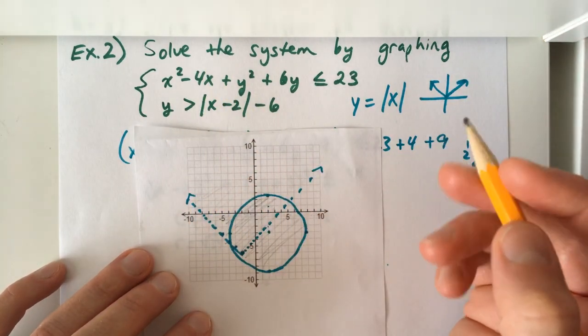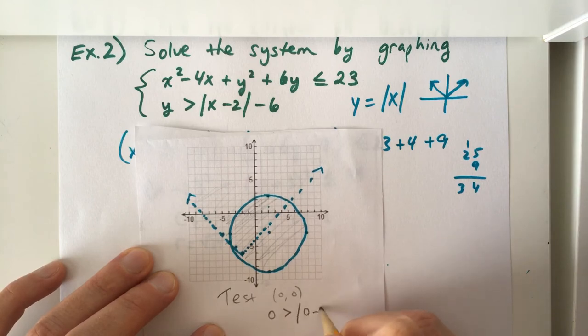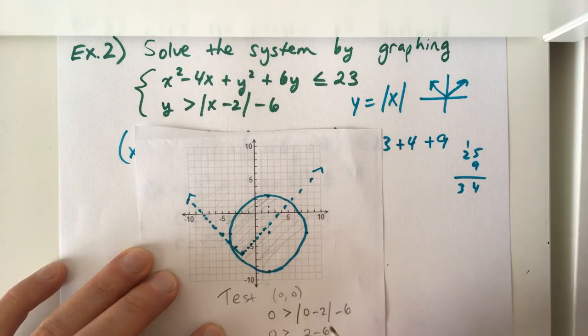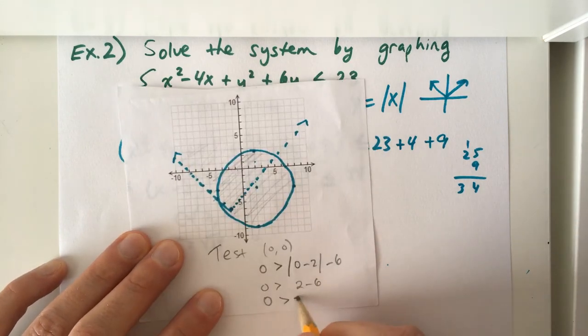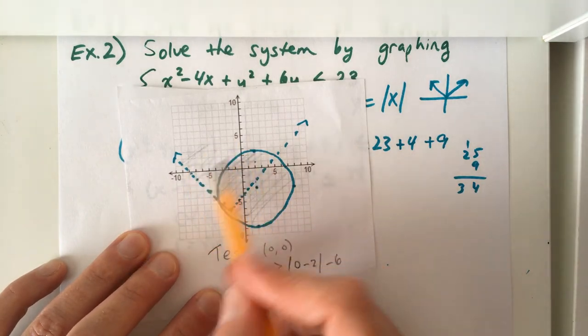So plugging in and testing 0, 0, I'm going to write it down here. We would get 0 greater than absolute value of 0 minus 2 minus 6. Well, this would become positive 2 minus 6. And 0 is greater than negative 4. That works. So this is part of the solution region. So we're going to shade up above.